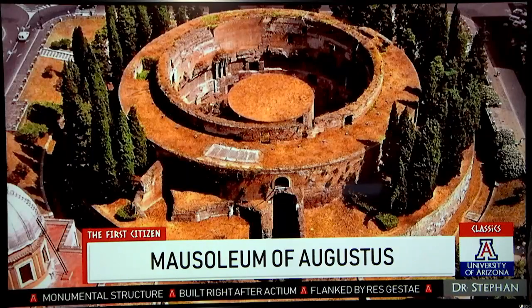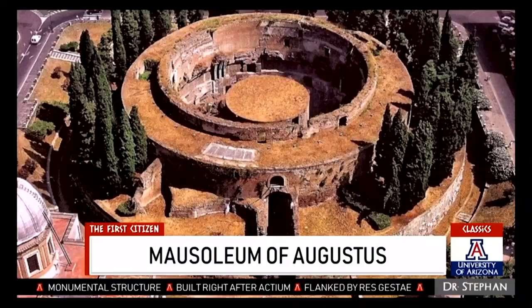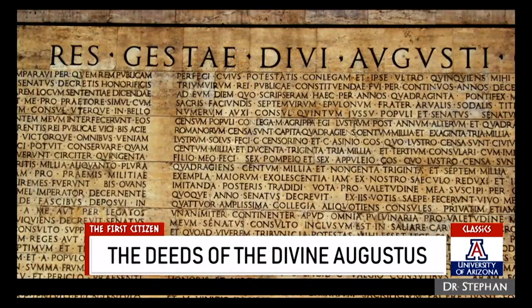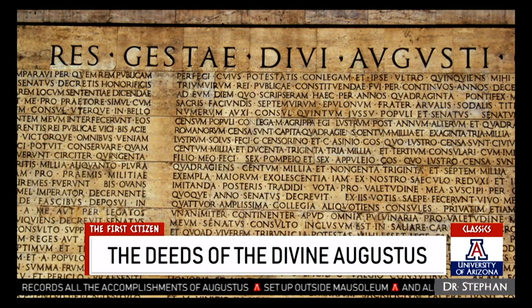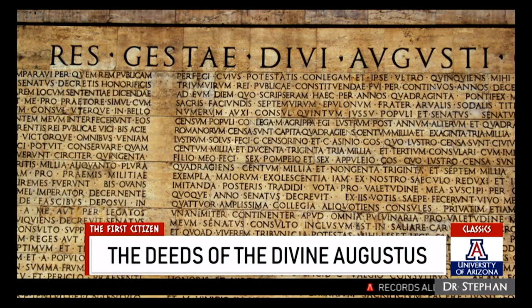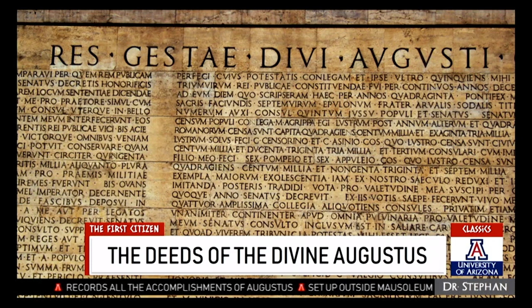Right after the Battle of Actium, after Augustus takes sole control of the Roman world, he starts a building project for his own tomb. We call this the Mausoleum of Augustus because in form it's similar to the Mausoleum at Halicarnassus. It's a monumental tomb you can still see in Rome today. Outside that tomb he puts up what we call the Res Gestae, or the Deeds of the Divine Augustus — a monumental inscription listing all the great things Augustus did for the Roman people. He puts it up outside his tomb so it can be remembered, but also all across the empire so that people far and wide know who brought peace to the Roman world.